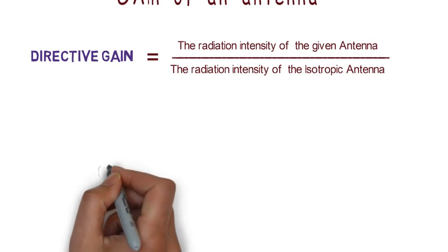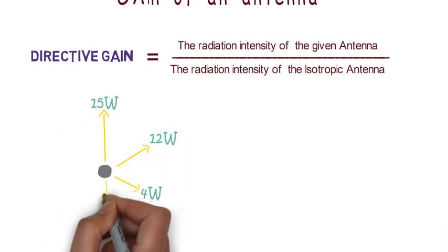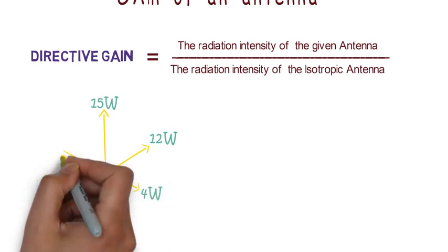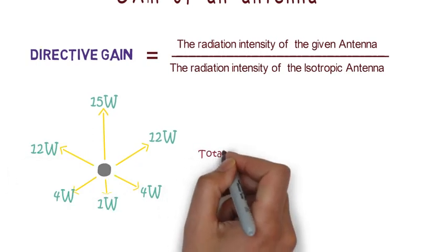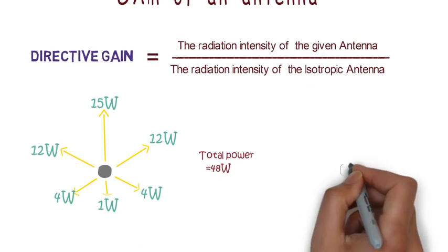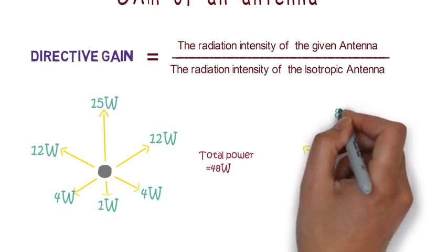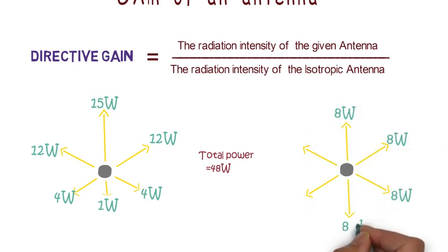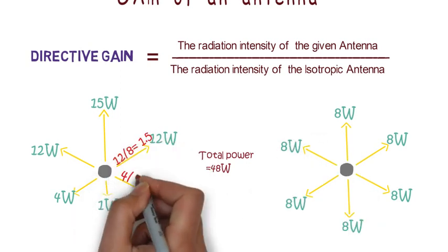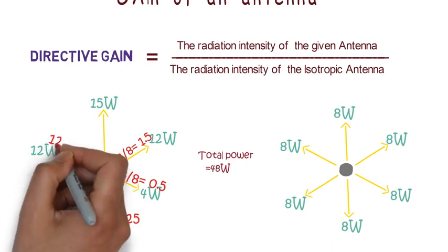Let's consider we have an antenna which radiates power of different values in different directions. And if we calculate total power of the antenna, then it is 48 watts. Now if an isotropic antenna radiates this much power, then it will distribute 8 watts of power in all six directions. So directive gain for the different directions can easily be calculated by the above formula.